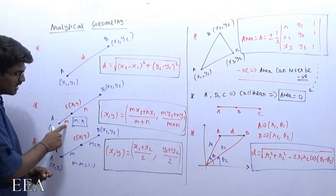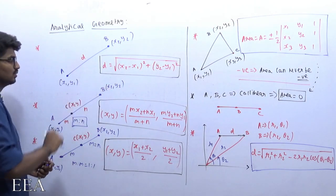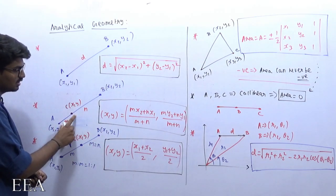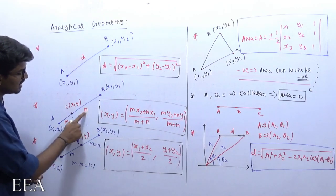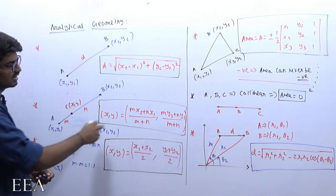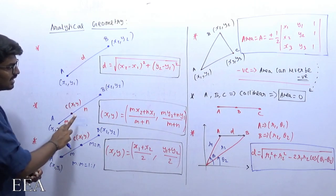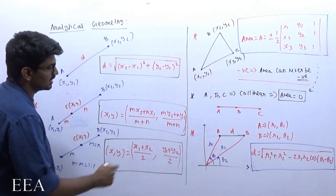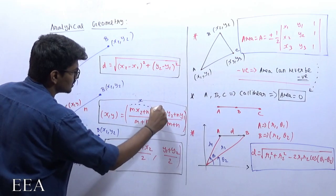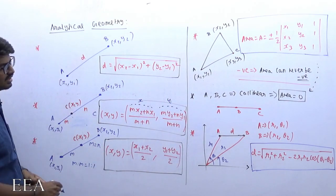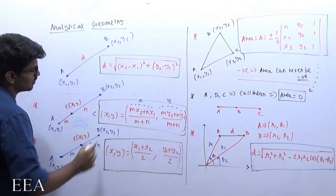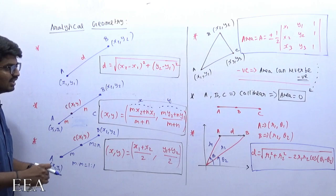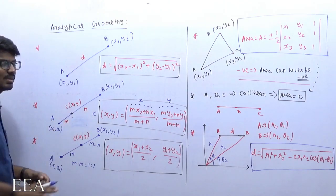It is very simple. M has to be multiplied with x2 — you can consider it like a reverse. M is the distance between x1 and xy, but you multiply M with x2 and N with x1. So x coordinate of C is (M·x2 + N·x1) / (M + N). Similarly, y coordinate of C is (M·y2 + N·y1) / (M + N). The denominator contains M plus N only for both cases.